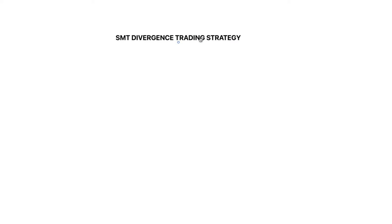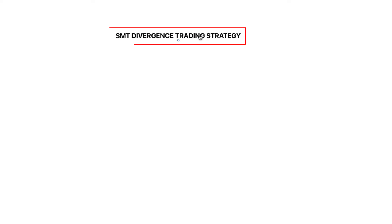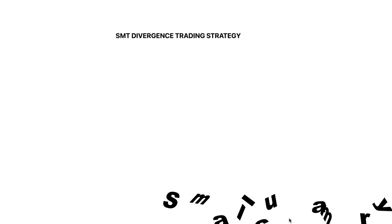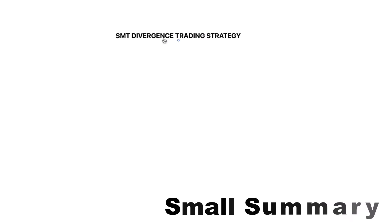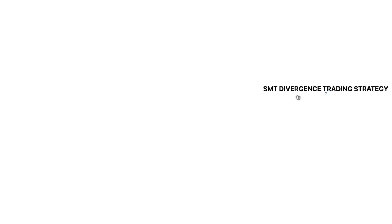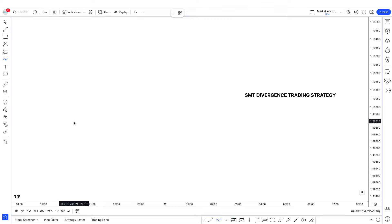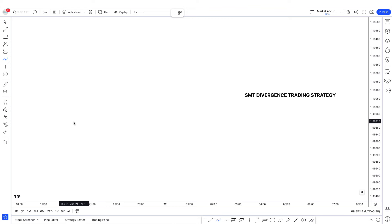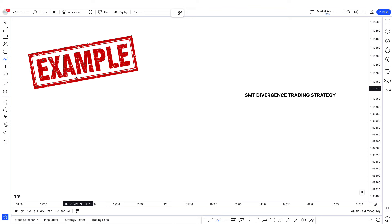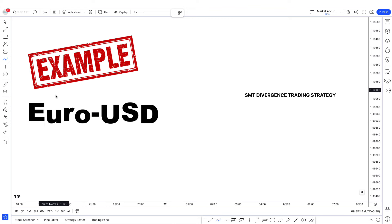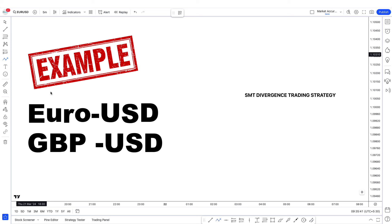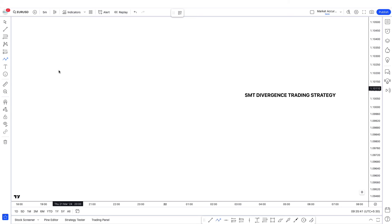I have explained SMT divergence on my channel previously. You can watch that video, or I can give you a small summary. For what is SMT divergence? You look at two or three correlating pairs. For example, EURUSD, GBPUSD, EURUSD and dollar index, or NAS100 and S&P500.